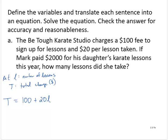Now we're told that Mark paid $2,000 for his daughter's karate lessons. So then substituting 2000 for T, we would have 2000 is equal to 100 plus 20L. And now we will solve for L to determine the number of lessons.